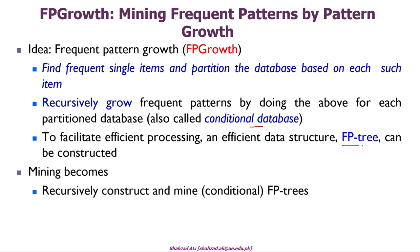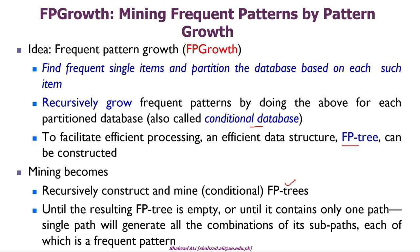The whole mining process can be summarized as follows: recursively construct and mine the frequent pattern tree, or conditional frequent pattern tree, until the resulting FP-Tree is empty or until it contains only one path or single path, which will generate all the combinations of its sub-paths, each of which is a frequent pattern. In simple words, in the first scan of the FP-Growth algorithm we generate frequent item sets of length 1, meaning single item sets.